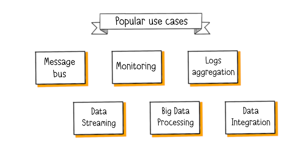Kafka serves as a data integration platform for moving data between different systems. It can connect databases, data lakes, and various data sources and destinations, providing a reliable and scalable data pipeline.